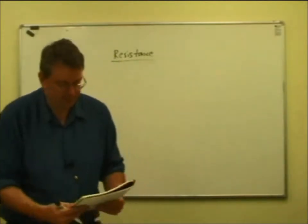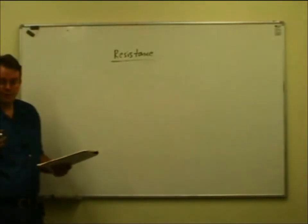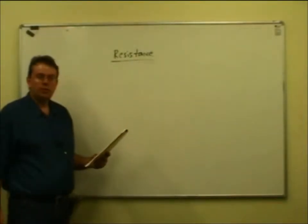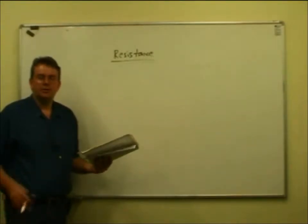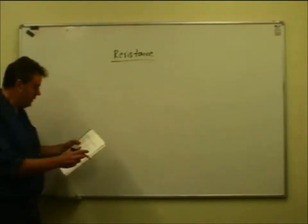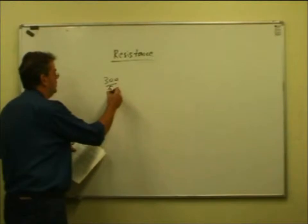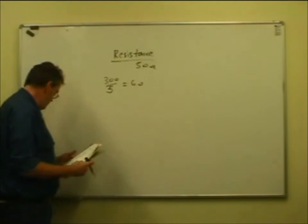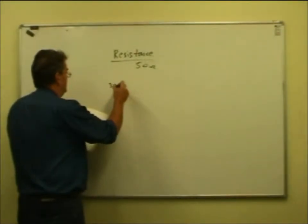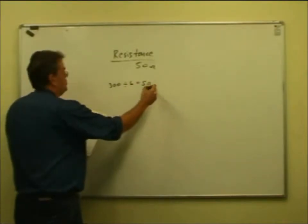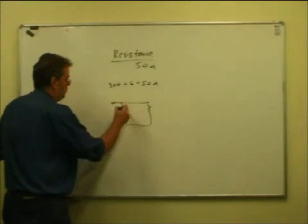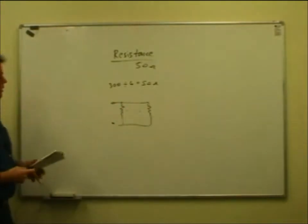A simple transmitter requires a 50 ohm dummy load - in other words, a 50 ohm resistor. Four 300 ohm resistors in parallel: 300 divided by 4 is 75 ohms. Five 300 ohm resistors: 300 divided by 5 is 60 - not 50. Six 300 ohm resistors in parallel: 300 divided by 6 is 50. That's question 29 - six 300 ohm resistors in parallel looks just like 50 ohms.